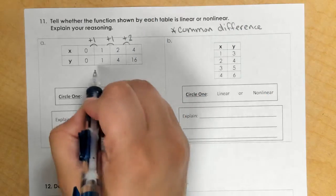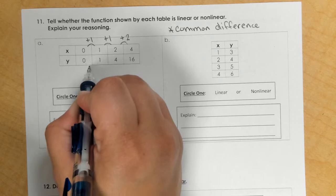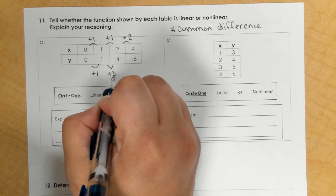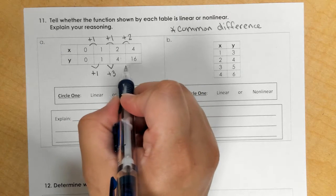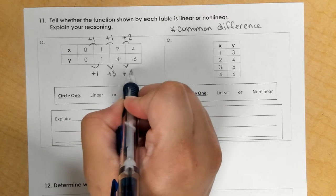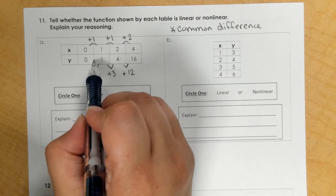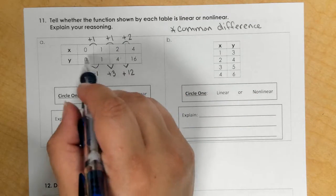Now for the y's, 0 to 1 is 1. 1 to 4, that's an increase of 3. From 4 to 16, that's an increase of 12. We also see different patterns like 1 times 4 is 16, but it's not a common difference.